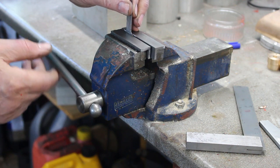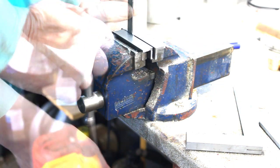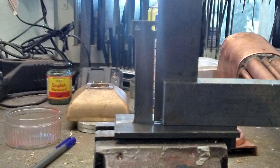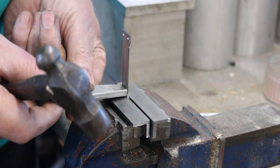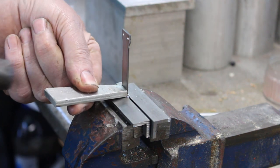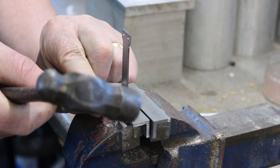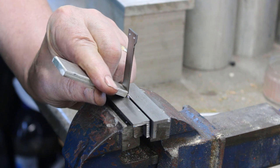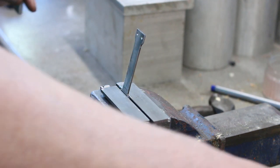Put it in the vise, check for squareness. Then I want the bend actually on the corner here so I'll just use a piece of aluminum, give it a bash. Let's see what it looks like.